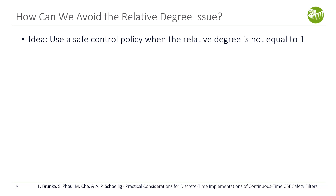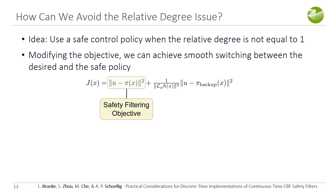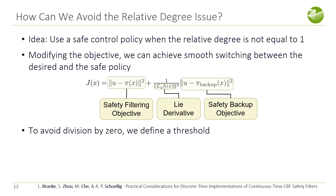Our first method relies on using a safe backup control policy where the relative degree is not equal to one. For this we modify the objective to achieve a smooth switching between the desired and the backup policy. The objective consists of the original safety filtering objective and a safety backup objective where pi backup is the backup policy. These two objectives are traded off by a weight that depends on the lead derivative. If the lead derivative is close to zero — meaning the relative degree is close to not being one anymore — this weight becomes very large and we apply control inputs closer to the backup policy. We also prevent division by zero by defining a threshold.